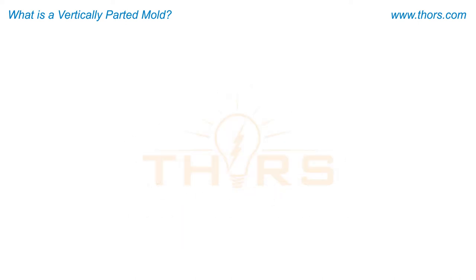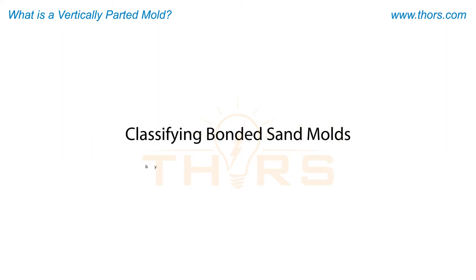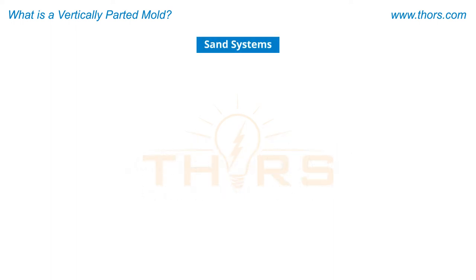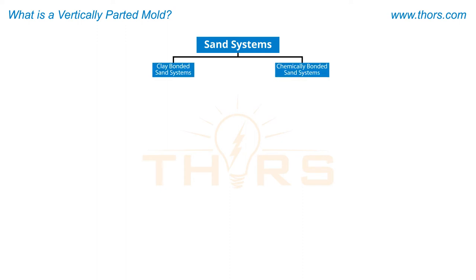One method for classifying bonded sand molds is by the type of binder used. On this basis, bonded sand molding can be broadly classified into clay bonded sand systems and chemically bonded sand systems.